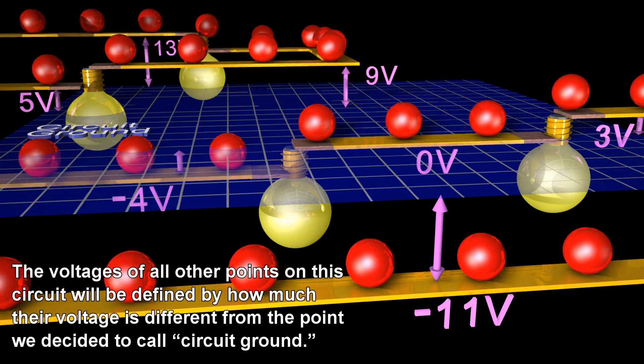The voltages of all other points on this circuit will be defined by how much their voltage is different from the point we decided to call circuit ground.